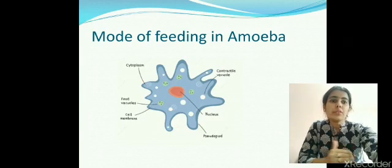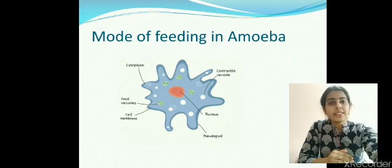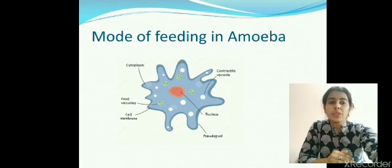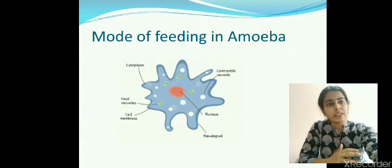Now we will learn about the mode of feeding and digestion in amoeba. Amoeba is a unicellular microscopic organism — unicellular means single-celled, consisting of only one cell. In the picture you can see tiny finger-like projections coming out randomly on the surface of the amoeba. These finger-like projections are called pseudopodia. Pseudo means false, and podia refers to feet, so these are called false feet as they help the animal to move from one place to another.